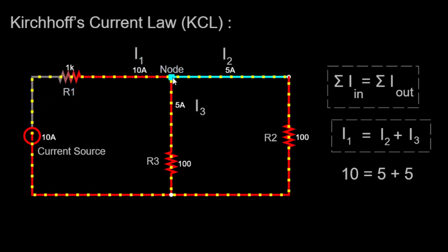Now, let's focus on the node where R1, R2 and R3 are connected. According to Kirchhoff's Current Law, the sum of currents entering and exiting any node must be zero.